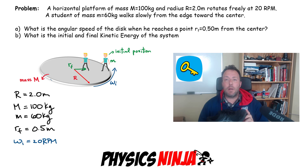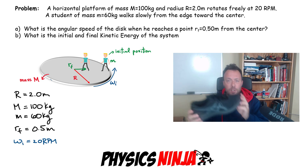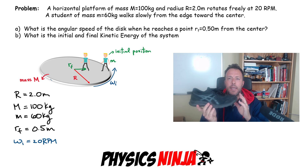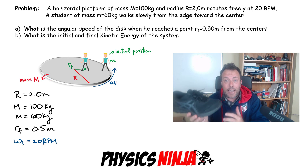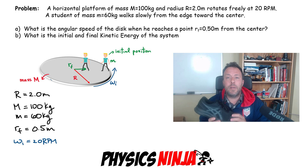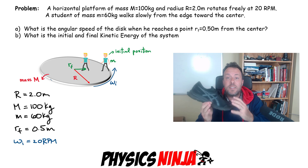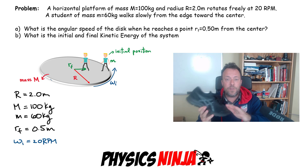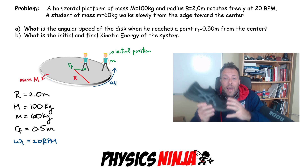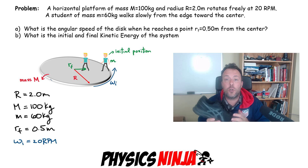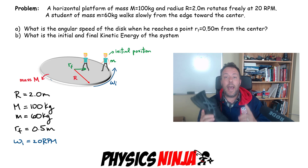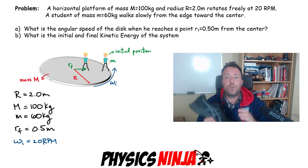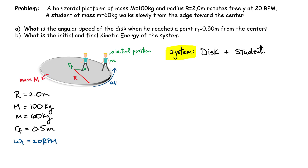The key to solving this problem is realizing that when the student walks toward the center, his foot makes contact with the platform and is not slipping — it's essentially a static friction situation. By Newton's third law, there are forces between the student and the platform, but if we treat them together as a system, and since the merry-go-round rotates freely with no external torques, the angular momentum of the combined system is conserved.